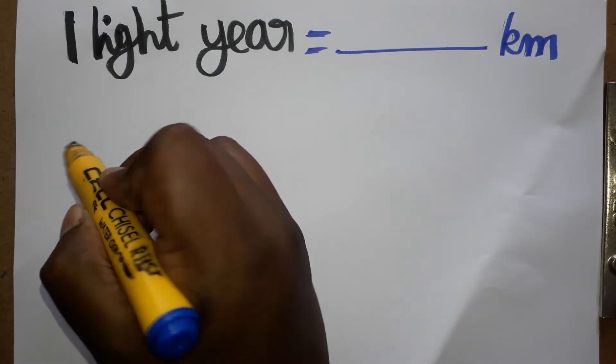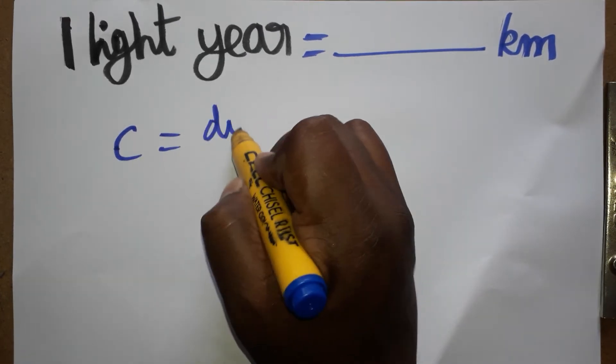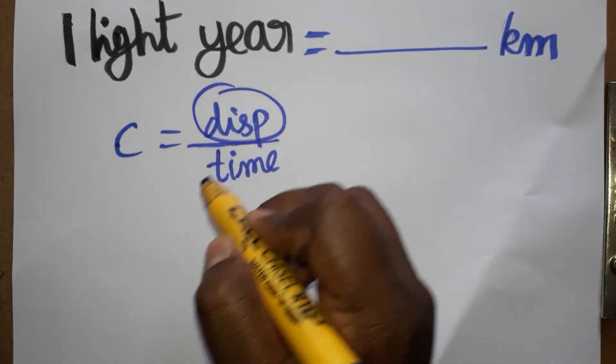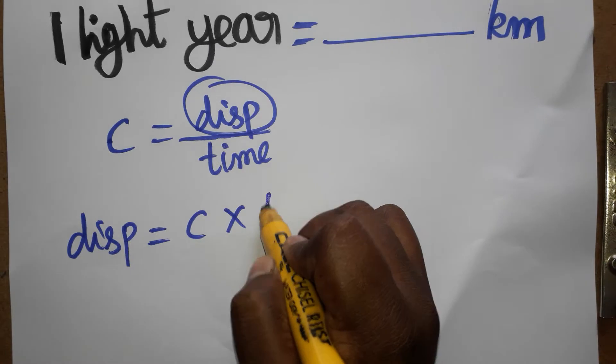What is light year? Light travels in one year. So with the velocity of the light, velocity is equal to displacement by time. So here we are talking about the displacement. Displacement is equal to velocity into time.